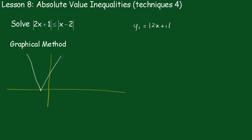Please don't be too accurate with this — it's just going to help you. Now on this side, this branch here, we've got y equals 2x plus 1, and this side we've got y equals minus 2x minus 1. And we'll draw the other one: y2 equals the absolute value of x minus 2. It'll touch the x-axis at 2, and it'll be not as steep, going through somewhere like this.